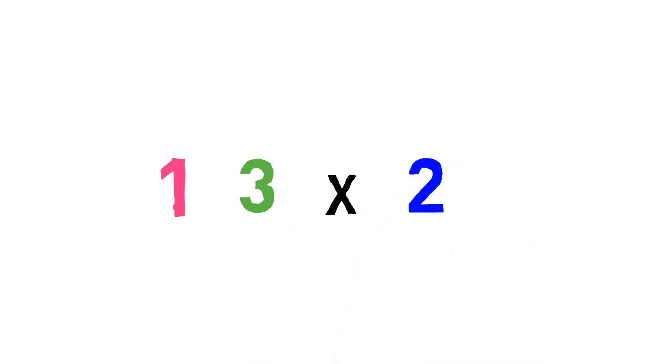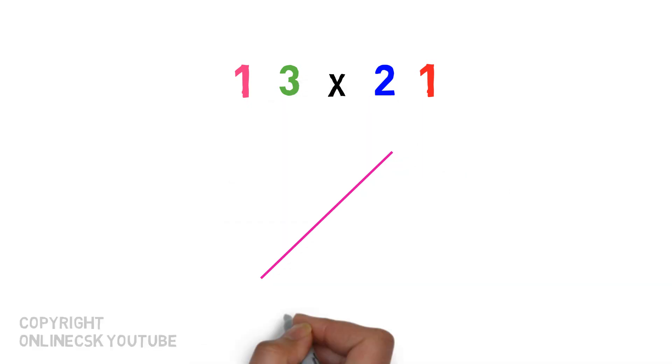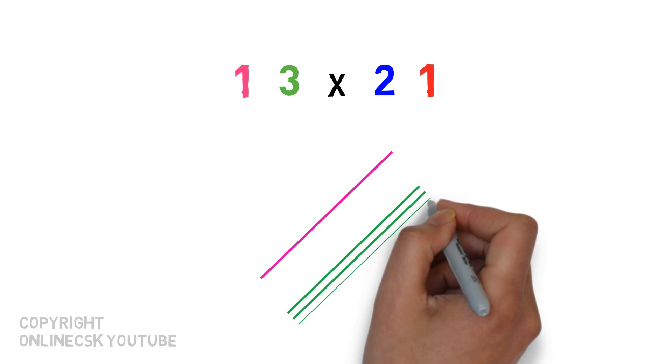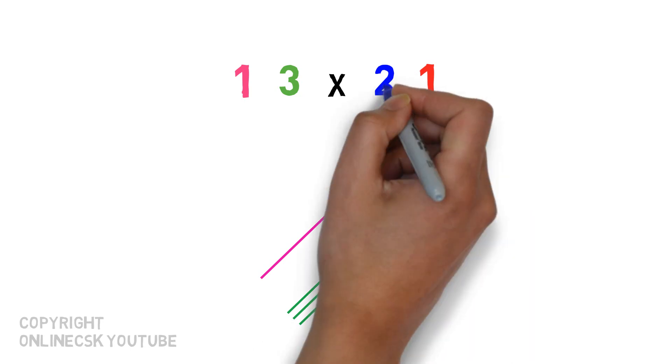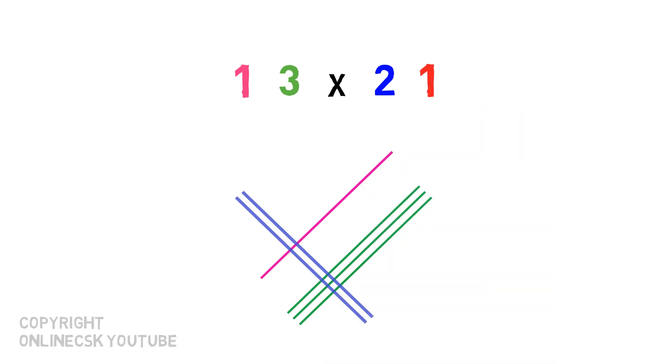Let's check the first question. Suppose I have number 13 and another number is 21, and I want to multiply both numbers. So I'll draw one single line and then for three I'll draw three lines. Similarly, for two I'll draw two lines and for one I'll draw one line. You can understand this using color coding.